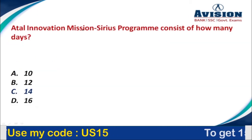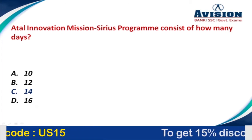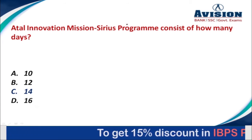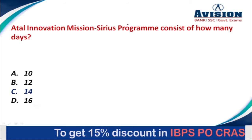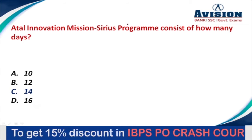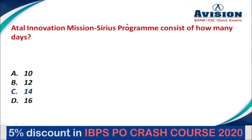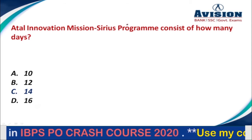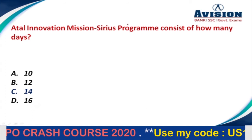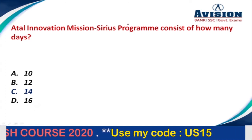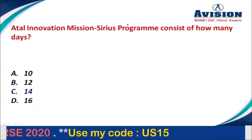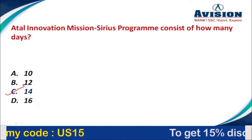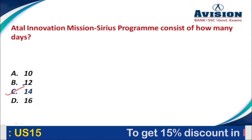Question number 3: The Util Innovation Mission Sirius program consists of how many days? Options are 10, 12, 14, or 16 days. The correct option is option C, that is 14 days.